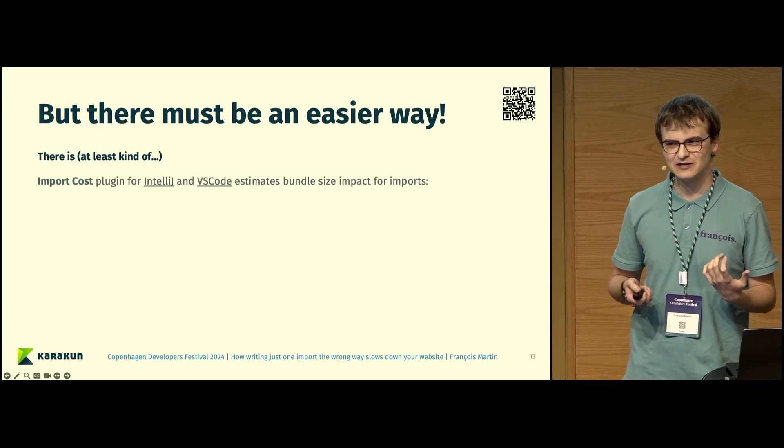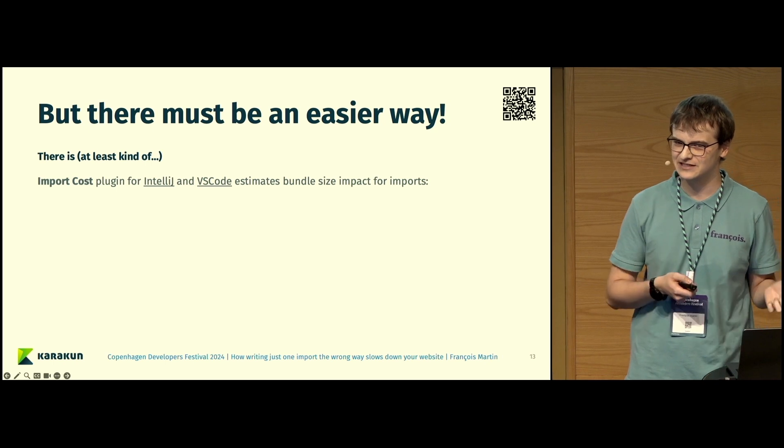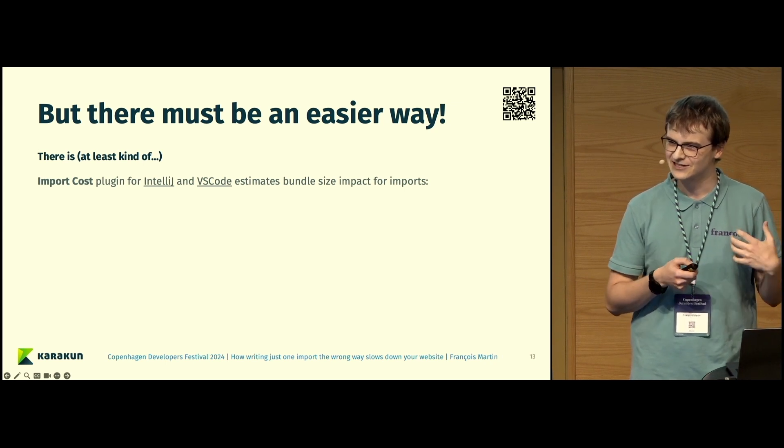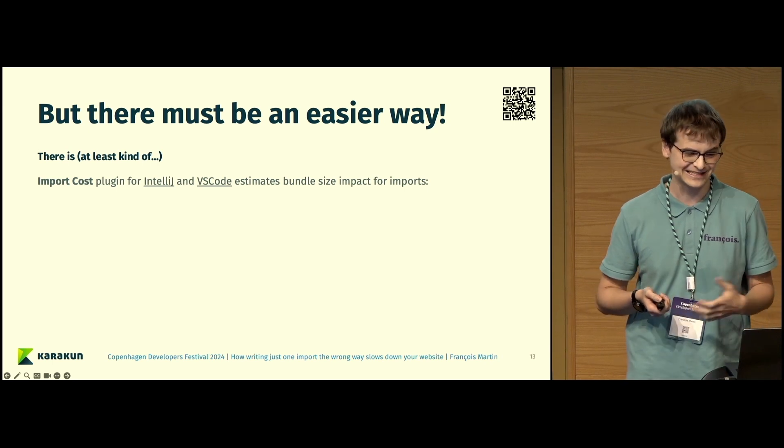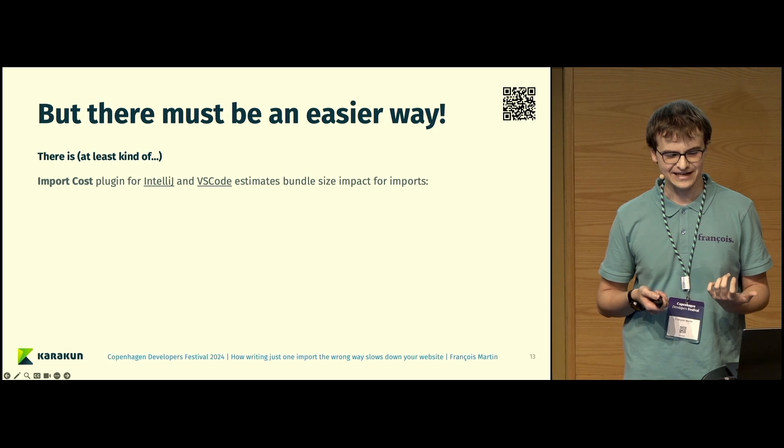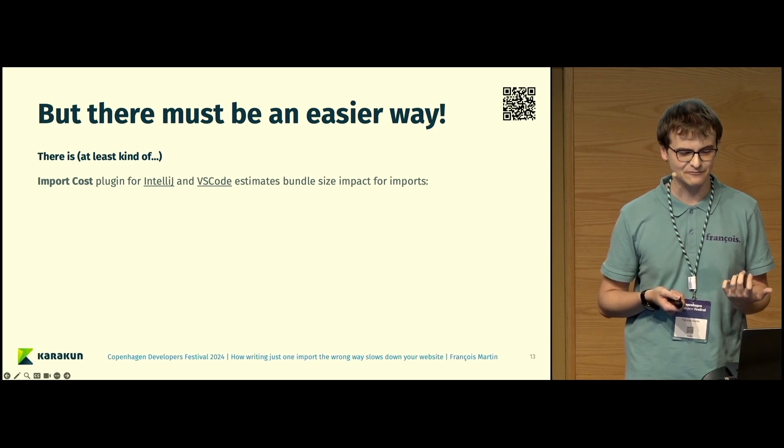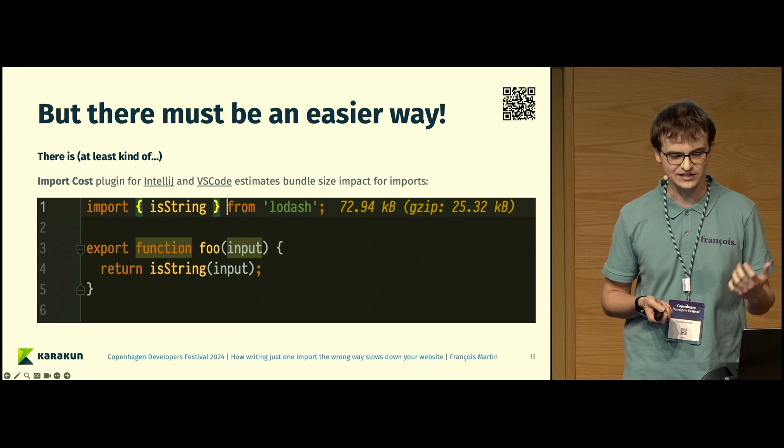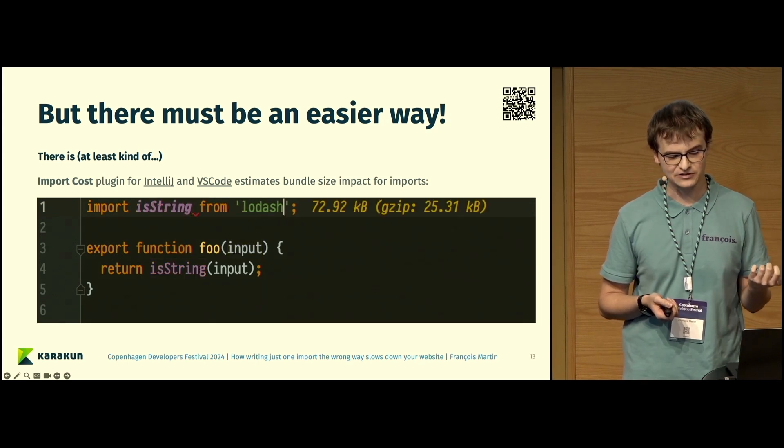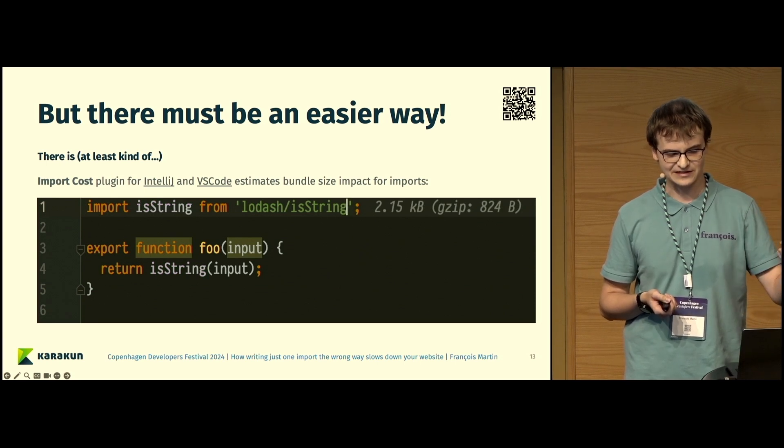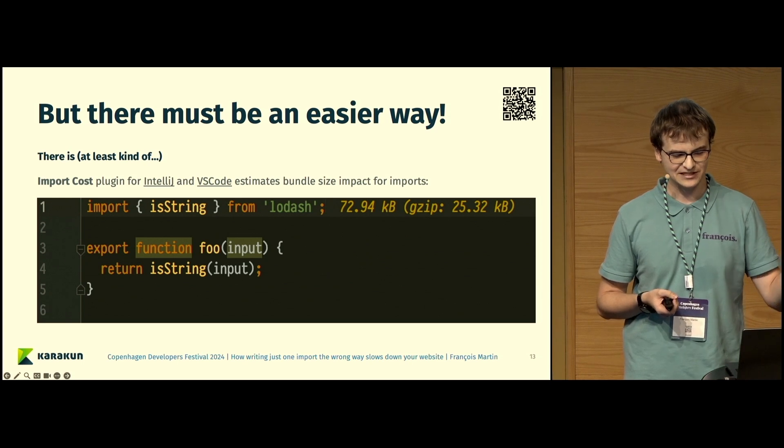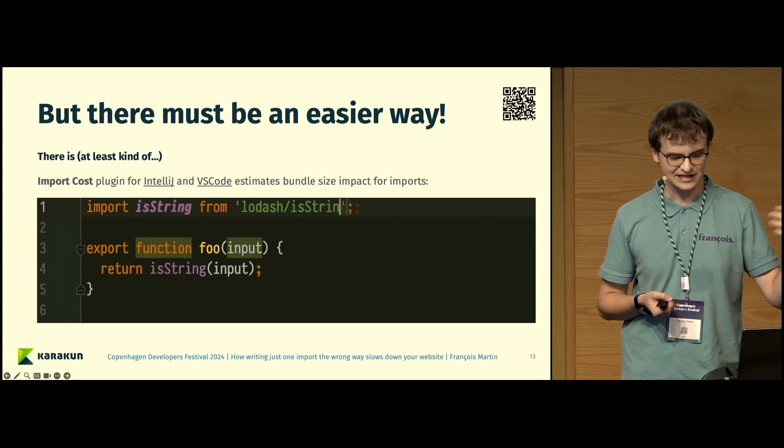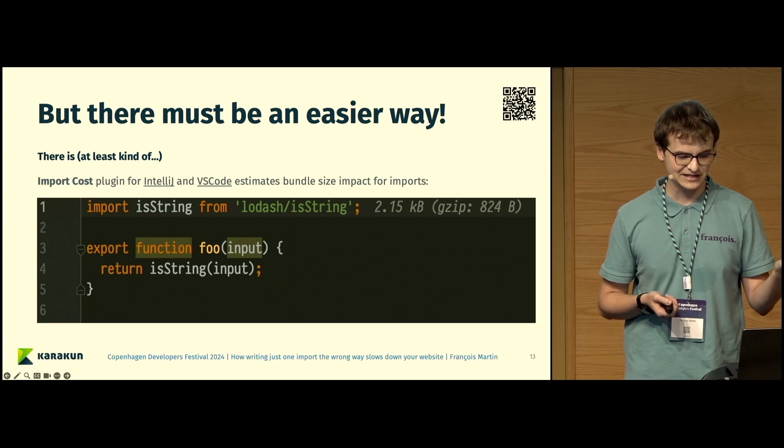You may be thinking now, there must be an easier way. Do I really need to go to every dependency and check what kind of imports and exports they have, if there's an alternative package, and find out what impact this has on my bundle size? This seems kind of annoying, and I would agree with you. That's actually the question I had as well. There is actually an import cost plugin, for example, for IntelliJ and for VS Code, which estimates the bundle size impact for imports. You can see here it shows exactly, depending on the style of import that you use, what the impact on the bundle size is. You can see with the cherry-picking syntax, we have 2.15 kilobytes. With the ES2015 syntax, we have 25 kilobytes. If we change it to the 2015 style import, you can see it also says it's 25 kilobytes. This actually makes it kind of easy.